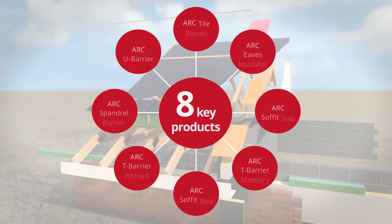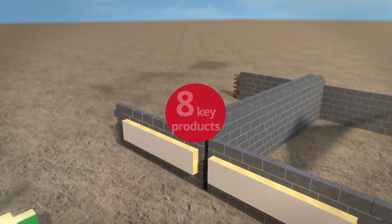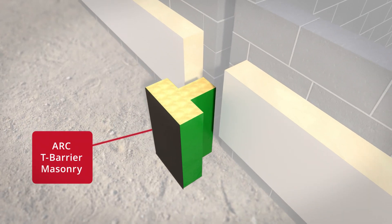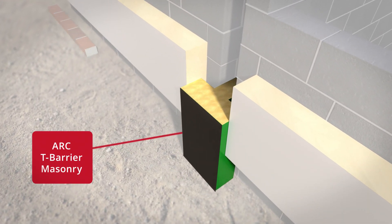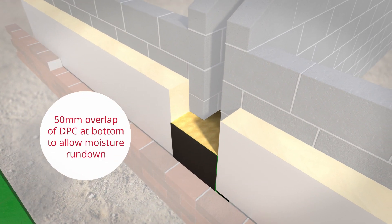The Arc Fire Stopping System is made up of eight key products. The unique Arc T barrier provides fire integrity and prevents heat loss at the external wall junction, effectively sealing the cavity.